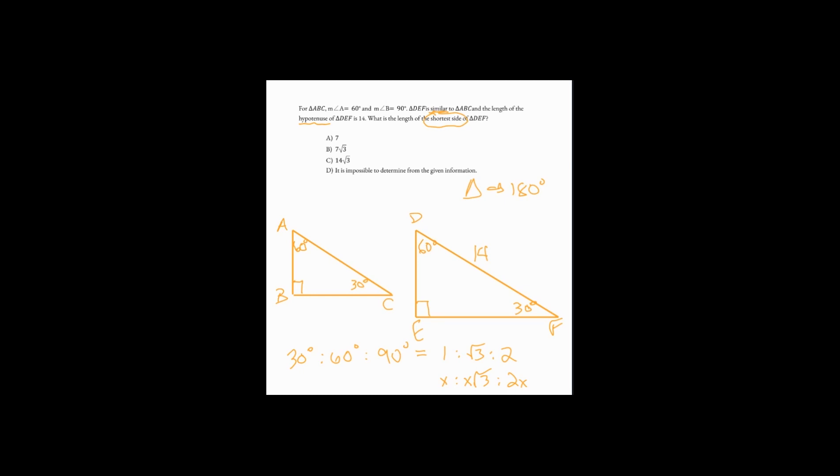But once we know it's a 30, 60, 90, we have more information. We know that the hypotenuse of the triangle, according to the ratio, is equal to 2x. x, x root 3, 2x, longest side is 2x, longest side is 14. So it must be the case that x equals 7.